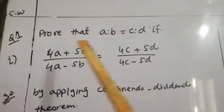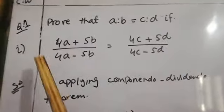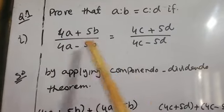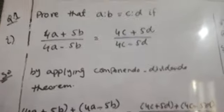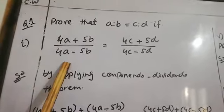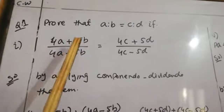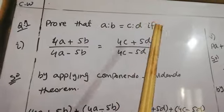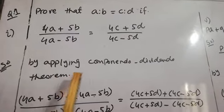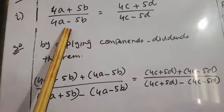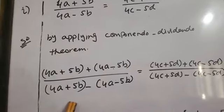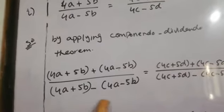Now we will move to Exercise 3.4, Question number 1. We need to prove that A ratio B equals C ratio D, given that 4A plus 5B by 4A minus 5B equals 4C plus 5D by 4C minus 5D. We will solve this equation and convert it into A ratio B equals C ratio D by applying the Componendo Dividendo theorem. In this theorem, we add the denominator to the numerator and take the difference between these two values.